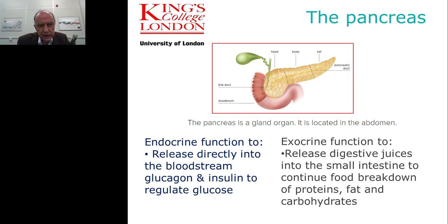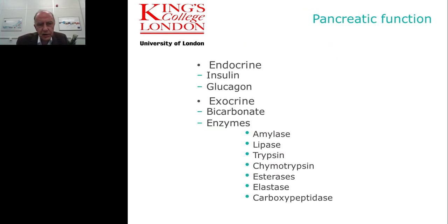The endocrine function can be assessed by measuring glucose, and also potentially by measuring insulin, glycogen and glucagon. The exocrine function can be divided into two parts: that which produces the fluid and associated bicarbonate, and the cells that produce the enzymes that take part in digestion. The enzymes relevant to digestive processes include amylase, lipase, trypsin, chymotrypsin, a family of esterases and carboxyesterases, elastase, and the carboxypeptidases.